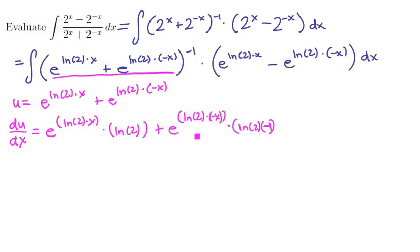So let's clean this up. Notice that there's an ln of 2 in both terms, so we'll factor it out, and the derivative becomes ln of 2 times the quantity e to the ln of 2 times x minus e to the ln of 2 times negative x.